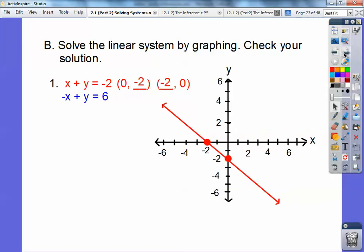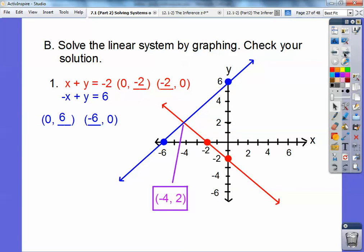That's that line. Okay, do the same thing with the blue guy. When x equals 0, y equals 6. So there it is way up there. And then when y equals 0, negative x equals 6. So x would be negative 6. So there it is over there. Okay, and those two points looks like to me, they are intersecting right there at negative 4, 2.